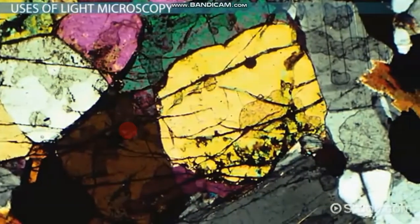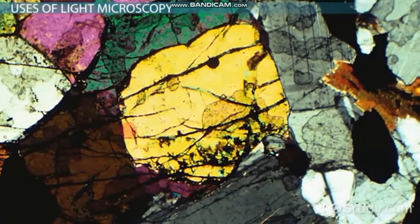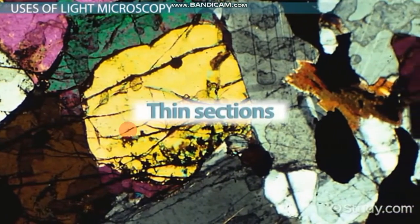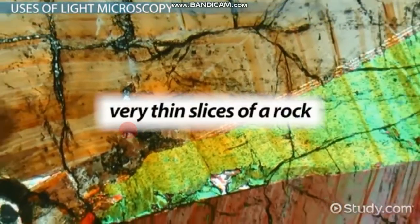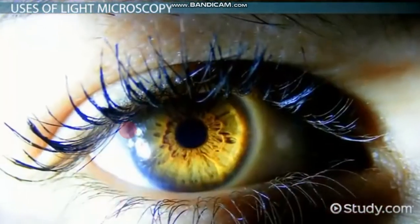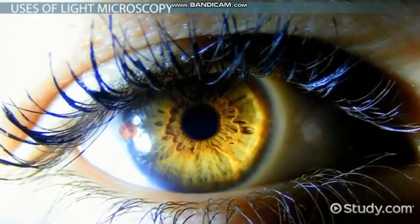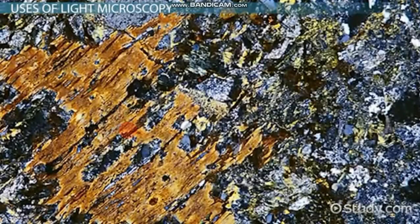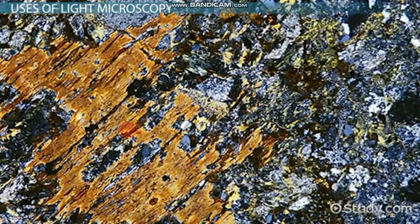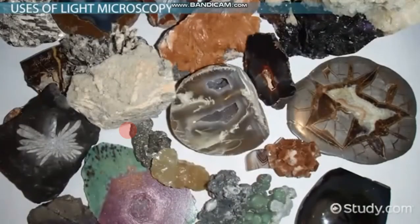Mineralogists also use light microscopy, typically with a special preparation of a sample called thin sections. As the name implies, thin sections are very thin slices of a rock. The sample needs to be thin enough for light to travel through from the light source to the user's eye. The thin section will allow the shape of different crystal grains to be seen. These shapes can tell the user what kinds of minerals are found in the sample.